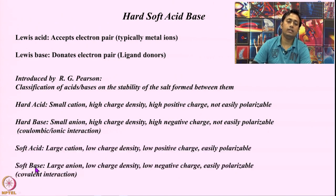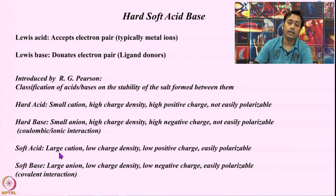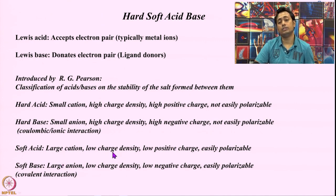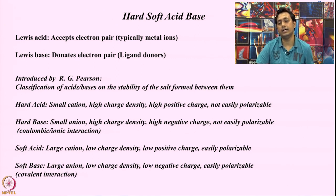Another system is the soft acid and soft base. A soft acid is generally a cation with a very high surface area, where the charge density is very low. The overall positive charge is quite low, so the charge density — charge divided by area — is small because the area is very high and the charge is pretty low. These are polarizable systems.